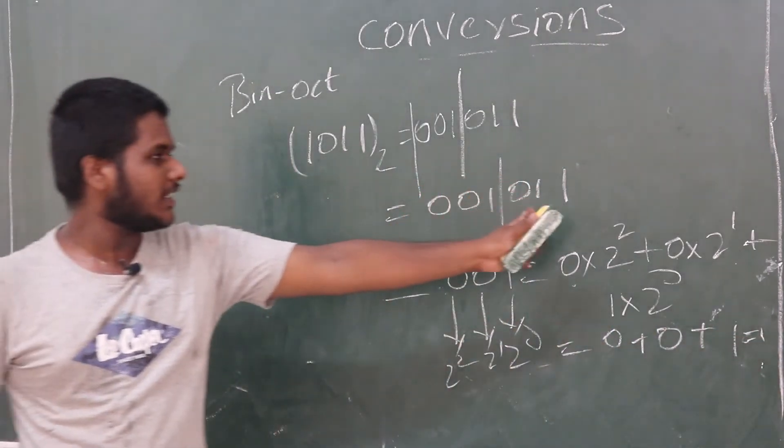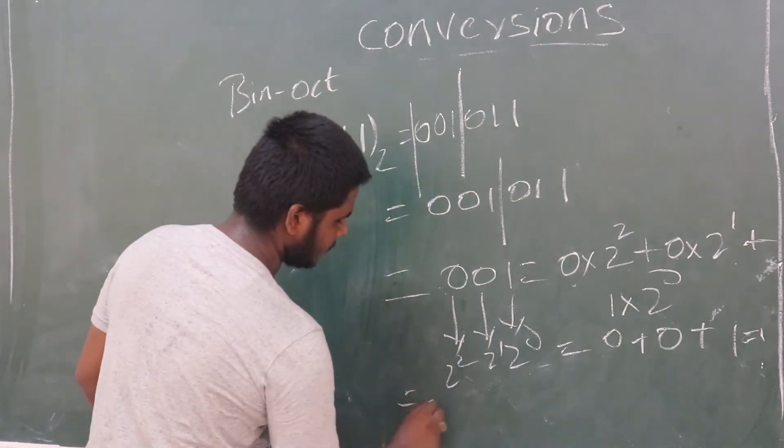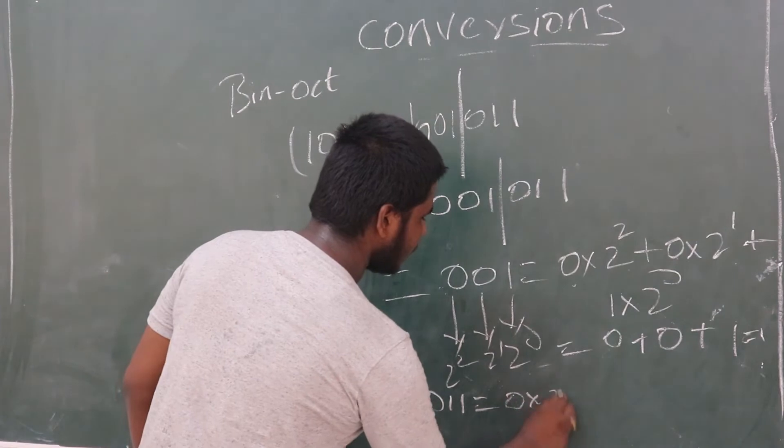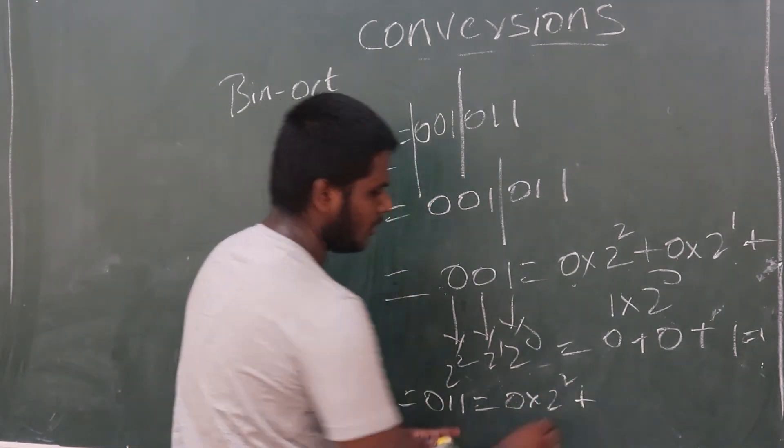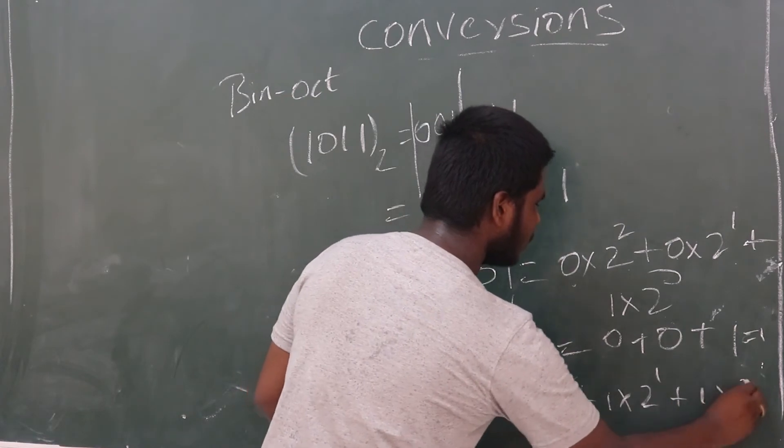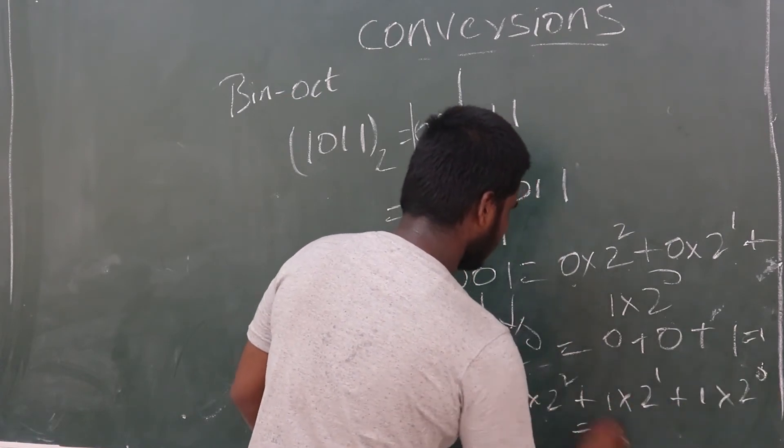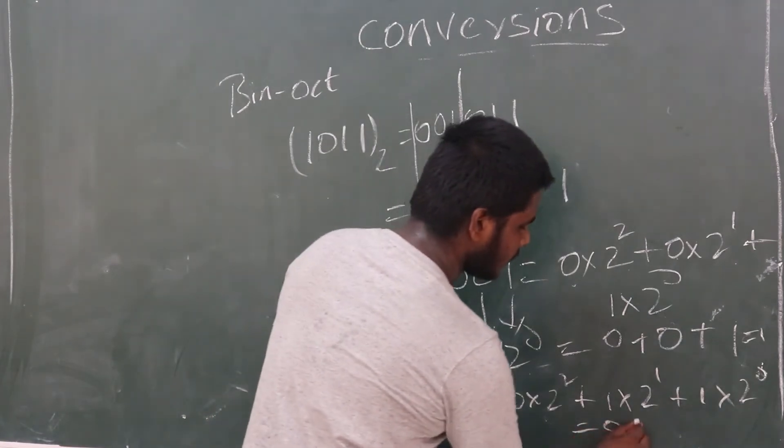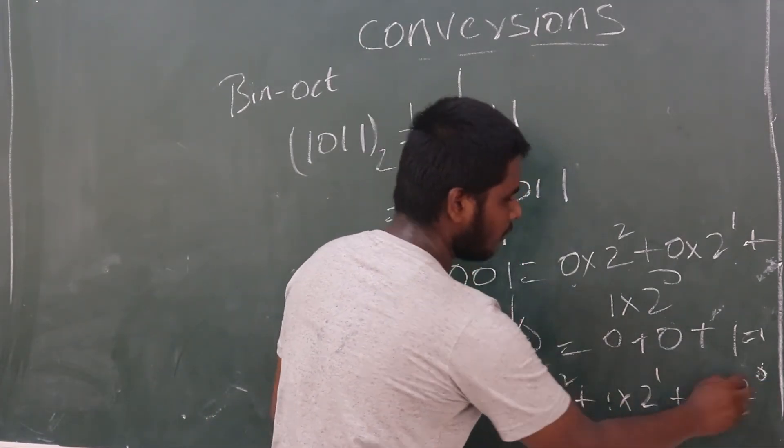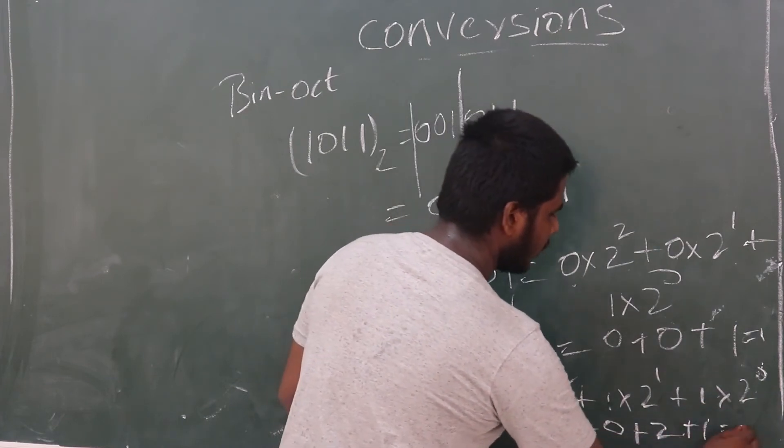Next, we will take 0, 1, 1. We solve: 0 into 2 square plus 1 into 2 power 1 plus 1 into 2 power 0. 0 into anything is 0, plus 1 into 2 is 2, plus 2 power 0 into 1. 1 into 1 is 1. Total 3.